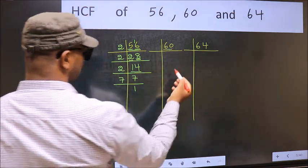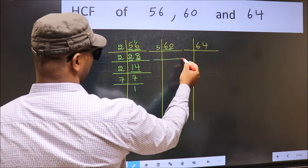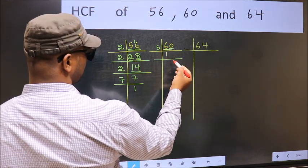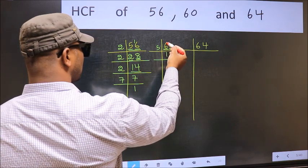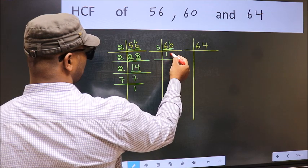Now the other number 60. Last digit 0, so take 5. First number 6. A number close to 6 in 5 table is 5 times 1 is 5. 6 minus 5 is 1, carried forward 10. When do we get 10 in 5 table? 5 times 2 is 10.